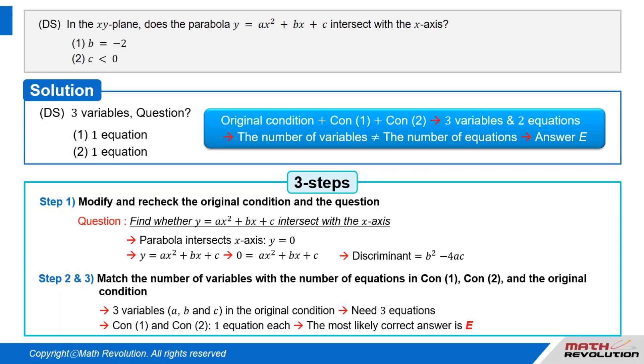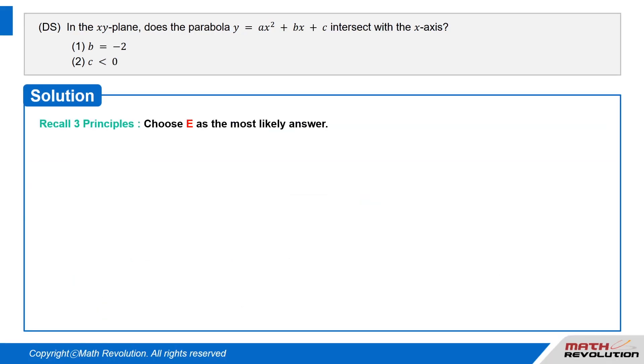Follow the second and third step. From the original condition, we have three variables: a, b, and c. To match the number of variables with the number of equations, we need three equations. Since conditions 1 and 2 will provide one equation each, e would most likely be the answer. Recall three principles and choose e as the most likely answer.